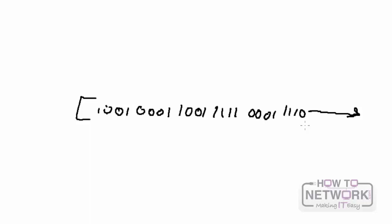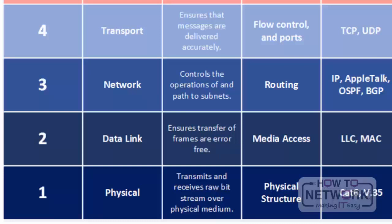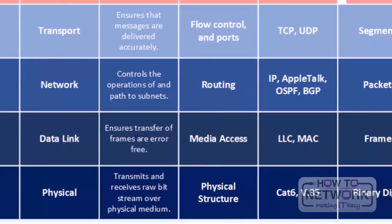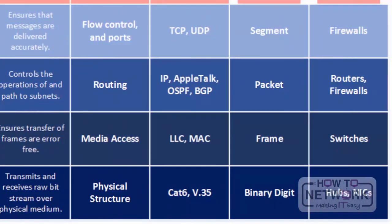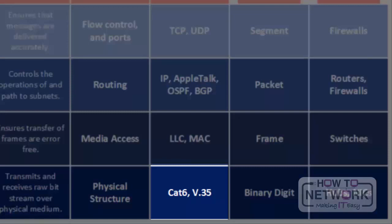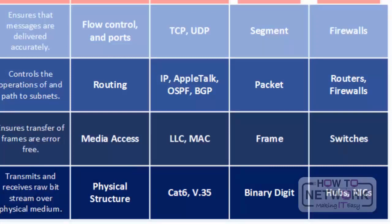We can appreciate what the OSI model actually does — it can take this binary information and pass it all the way back up to an application on a remote system. Now that you've learned about the first four layers, let's look at what actually operates at these layers. Some examples of what works at layer 1 include CAT 6 cabling, a network interface card, or any type of physical transport.